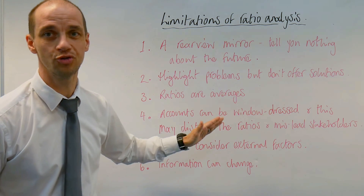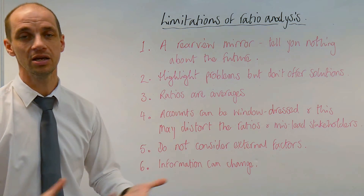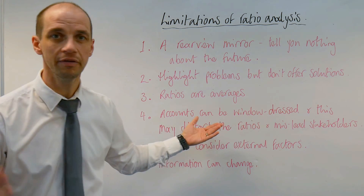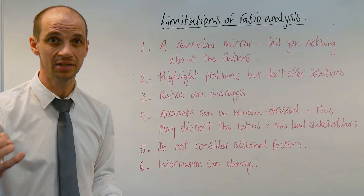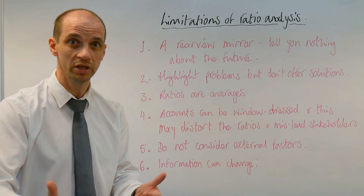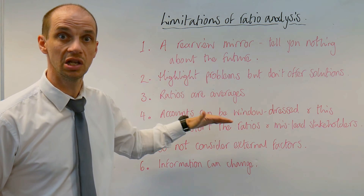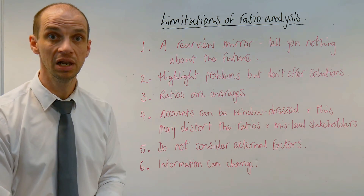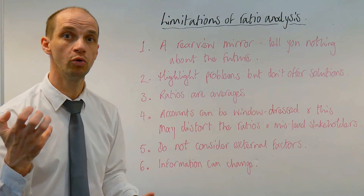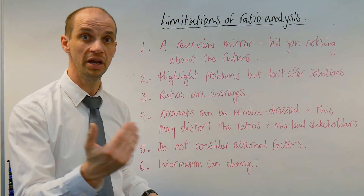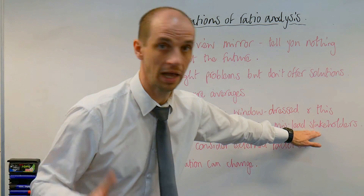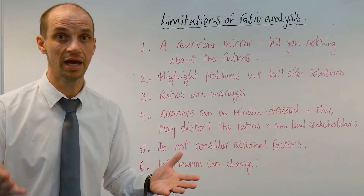Number four: accounts can be window-dressed, and this may distort the ratios and mislead stakeholders. Window-dressing is a technical concept, but simply if you imagine depreciating a given asset at a slower rate — perhaps deciding to keep a piece of machinery for five years instead of four years — then you depreciate it at a slower rate, which can help boost your profitability in that given period. What's more, you may draw forward income that you're expecting in a future period and declare it right now because you want the profits to look better to stakeholders or shareholders.